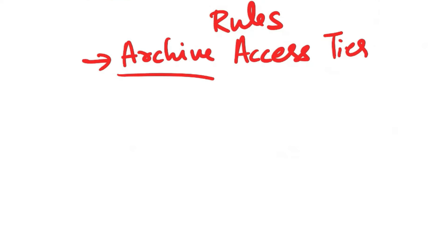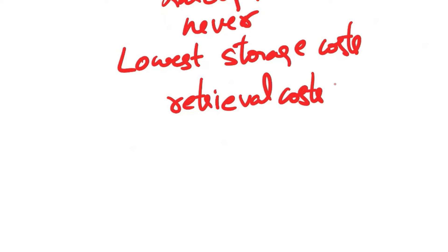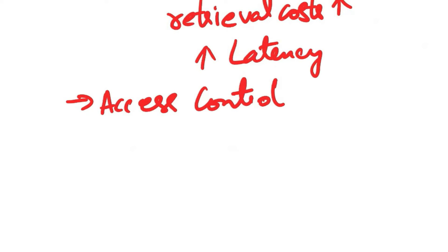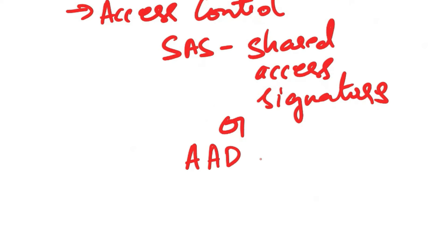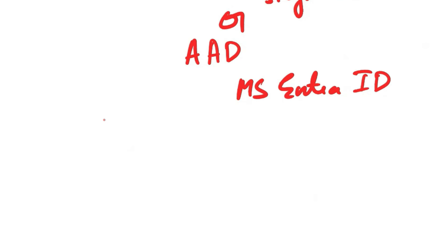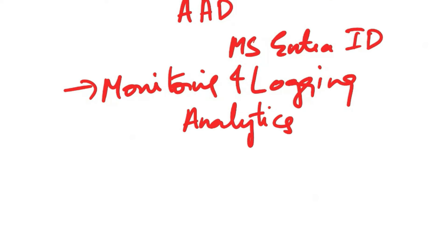Leverage the archive access tier for data that is rarely or never accessed. This tier offers the lowest storage costs but incurs retrieval costs and higher latency when accessing data. Consider the expected retrieval patterns and potential delay in accessing data from the archive tier. For access control, implement secure access using SAS (Shared Access Signatures) or Azure Active Directory authentication — now called Microsoft Entra ID. For monitoring and logging, enable Azure Storage Analytics to monitor and log storage metrics, allowing you to track access patterns, analyze costs, and optimize your storage usage.